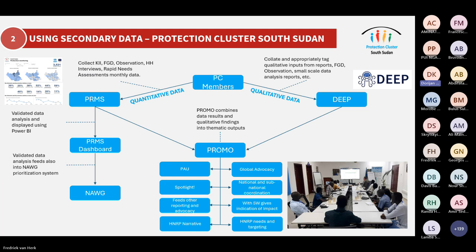What have we done to mitigate this problem? In 2021 we started, and in 2022 we developed a protection monitoring system using key informant interviews. At the moment, we are also expanding it to incorporate focal group discussions, observation methodologies, unified and harmonized household level interviews, rapid needs assessments, and so forth. This is validated, visualized, and shared through a dashboard, and made available for analysts or reporting officers. We have established a group called PROMO — the Protection Monitoring Working Group — which comprises about 40 protection agencies in the country, and we are working towards expanding the pool of members.